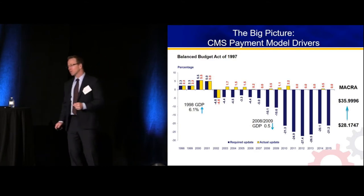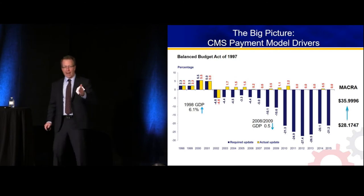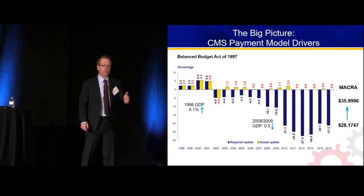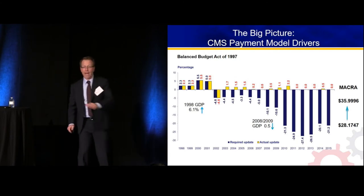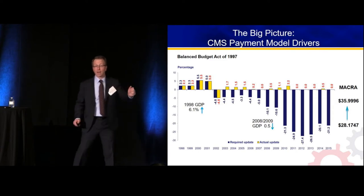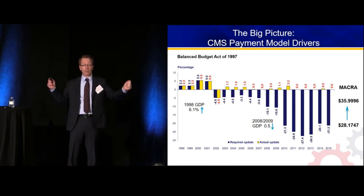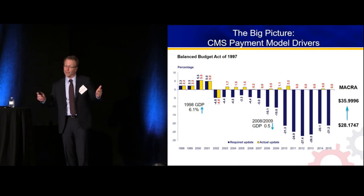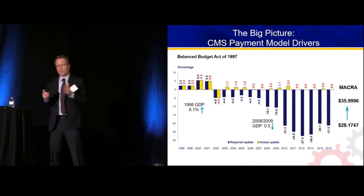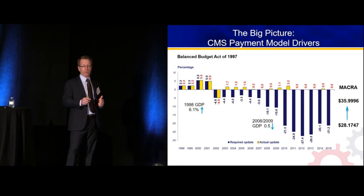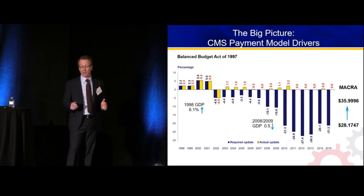And lo and behold, in 2015 MACRA — the Medicare Access and CHIP Reauthorization Act — was passed, and did away with that tie between the tax base, GDP, and overall Medicare spending. The sustainable growth rate formula that was mandating that 20–21% cut to the conversion factor — what Medicare pays us per RVU — was gone.